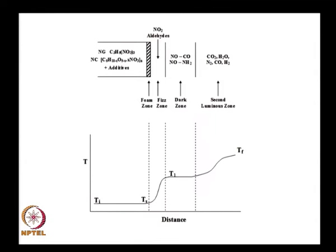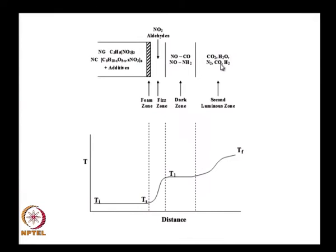What did we do for the case of double base propellants? We have nitrocellulose and nitroglycerine, with NO2, aldehydes, and other constituents that react. The temperature goes from the surface temperature to the temperature at the edge of the fizz zone. The foam zone is the preheated solid surface of the propellant; then you had the fizz zone where temperature went to T1. Thereafter it remained constant in the dark zone, where reactions between NO and NH2O and CO do not generate much heat, but thereafter reactions generate heat and you get CO2, H2O and the temperature rises to the final value.